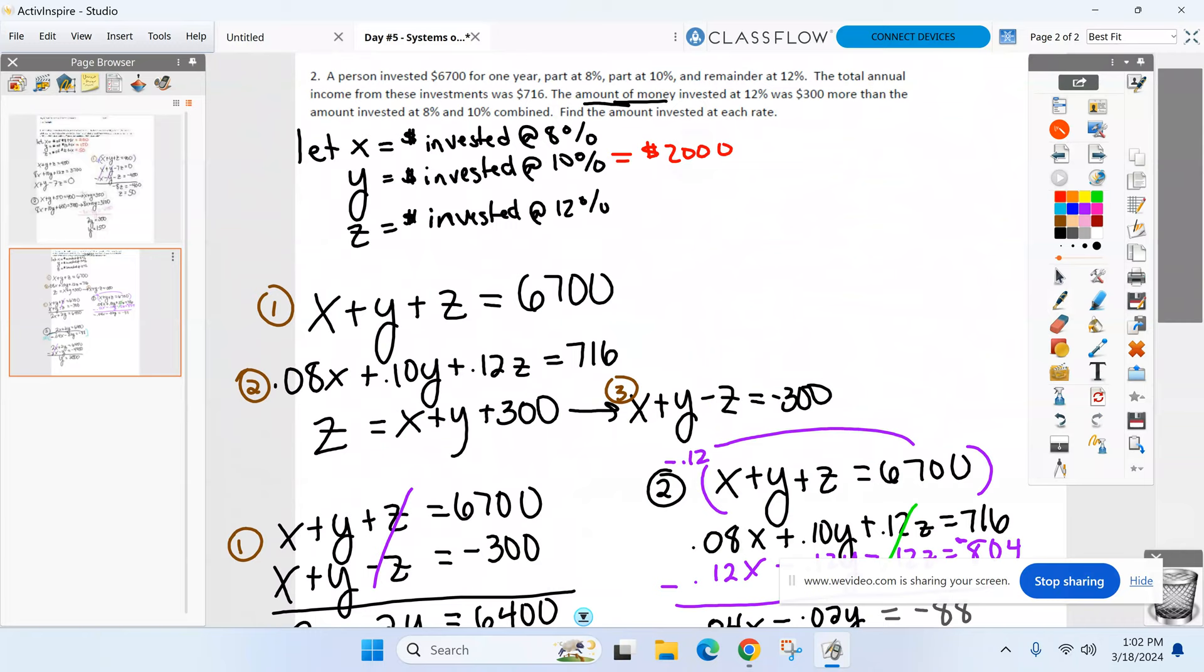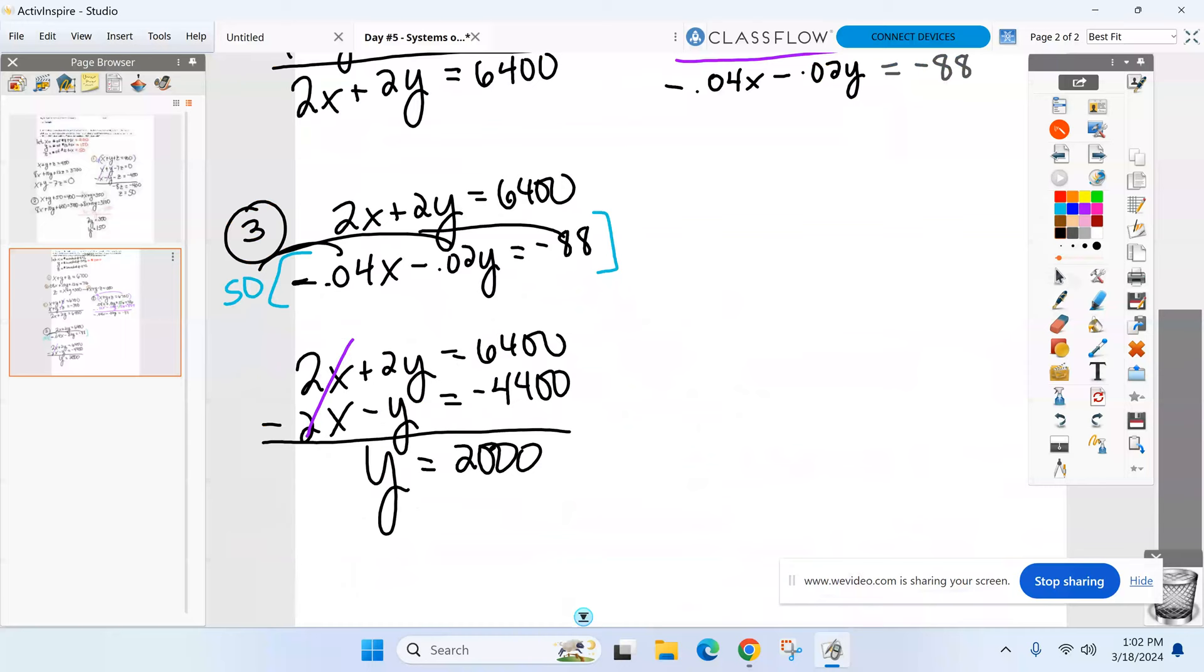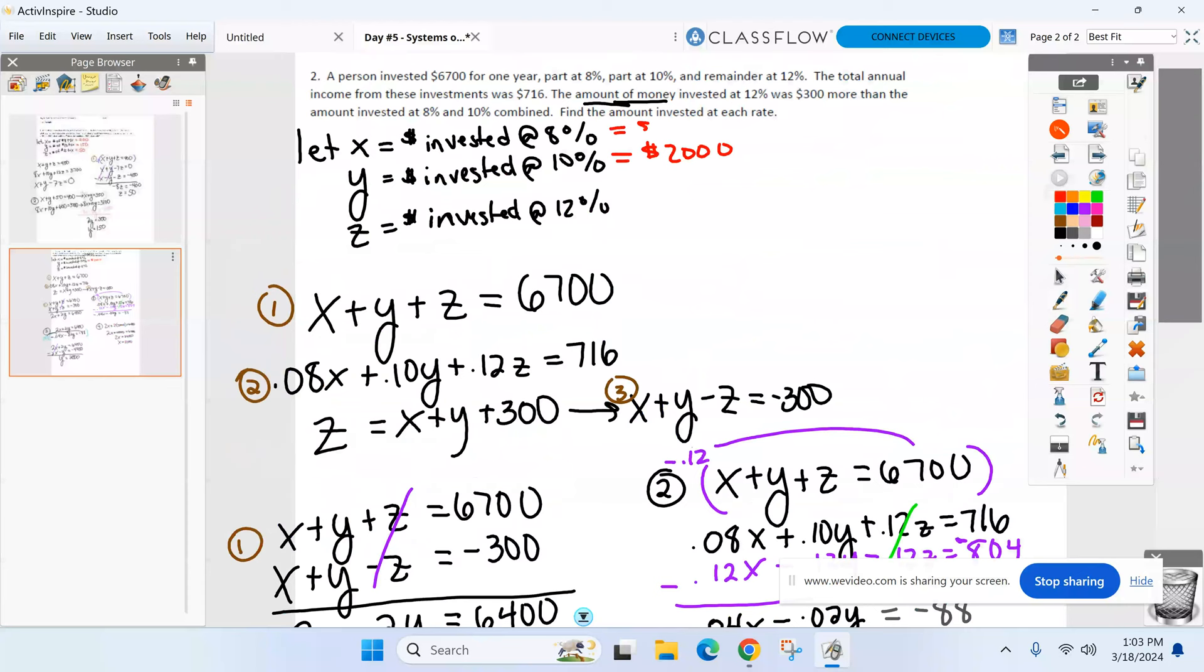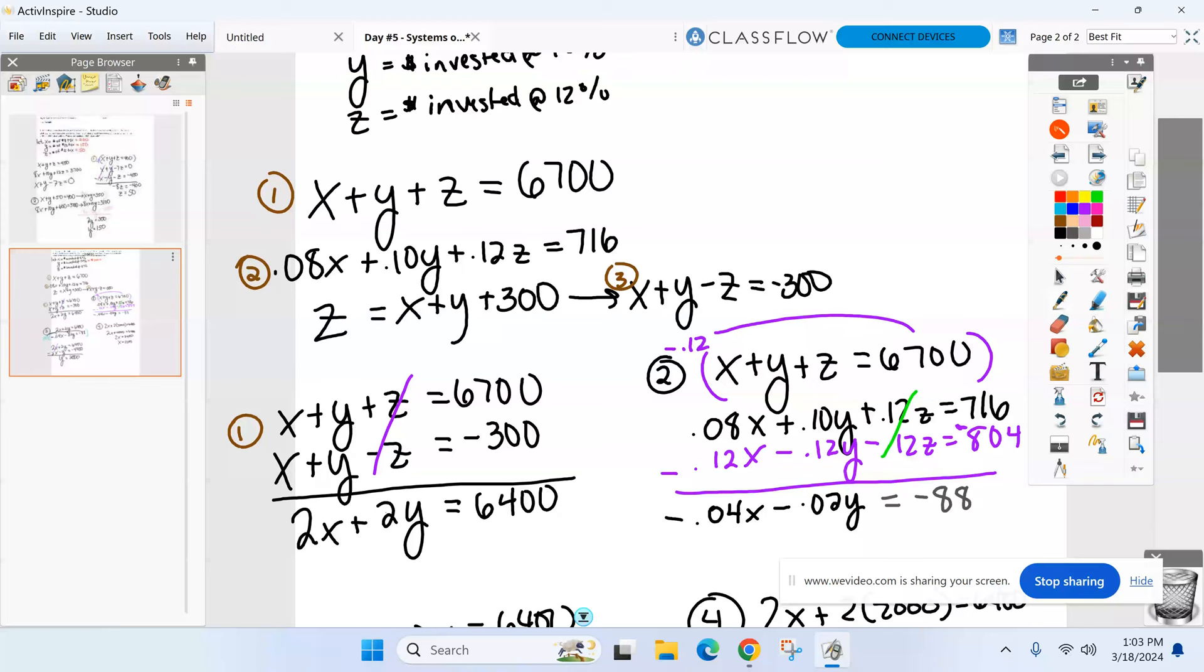You guys take over. What do I do with the 2,000 now? Probably avoid the decimal one. So keep working backwards. 2X plus 2 times 2,000 equals 6,400. That equals 4,000. Subtract the 4,000 on each side. 2,400. So it looks like we invested $1,200 in the 8% account. And now, once you have two variables, you go back up to one of the original three and solve for Z.